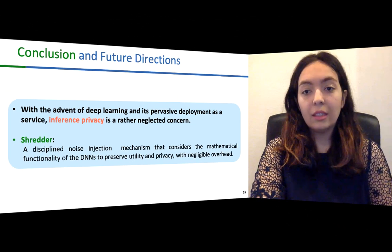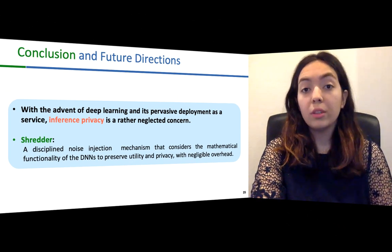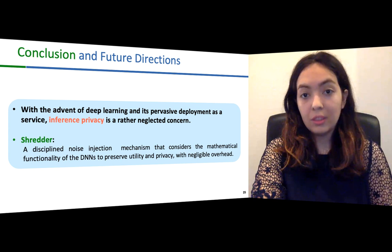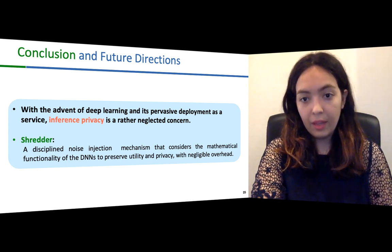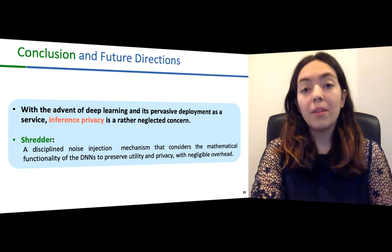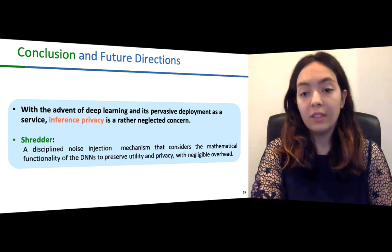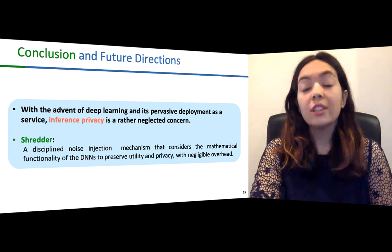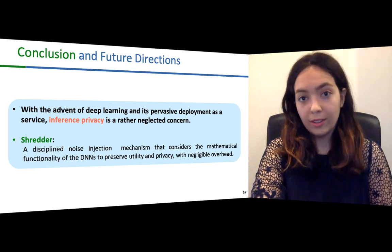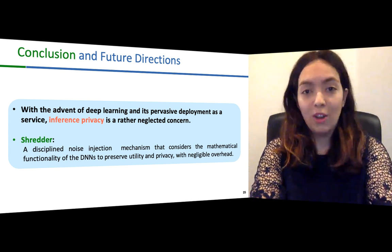Given the recent advances in deep learning algorithms and the deployment of deep neural networks in devices and services around us, the privacy of inference systems is an important emerging concern. In this work, we propose Shredder, which is a disciplined noise injection mechanism that considers the mathematical functionality of the DNNs to preserve utility and privacy with negligible overhead. Shredder is just an initial step in this direction and there is a long way to walk. Thanks for listening.